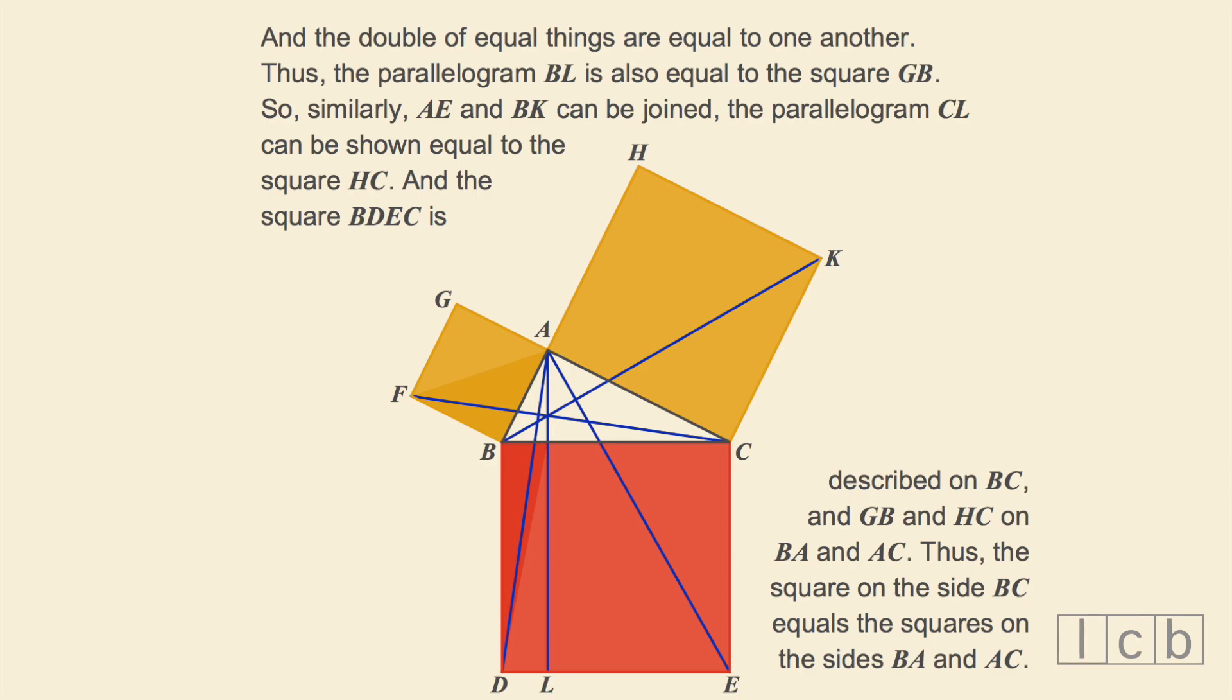And the square BDEC is described on BC, and GB and HC on BA and AC. Thus, the square on the side BC equals the squares on the sides BA and AC.